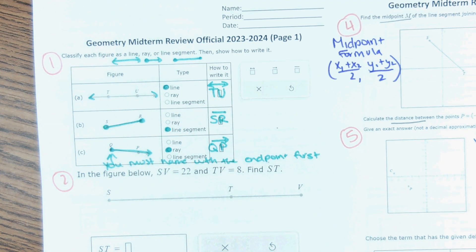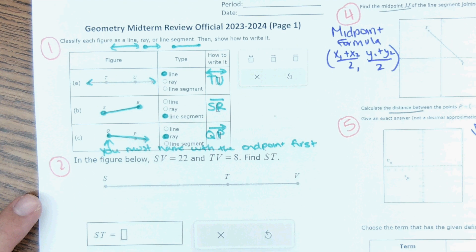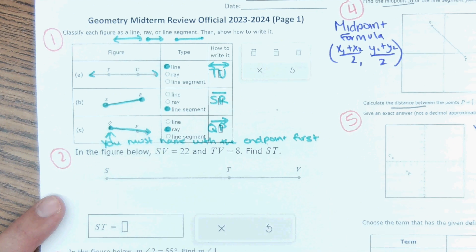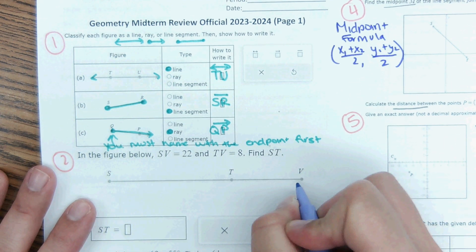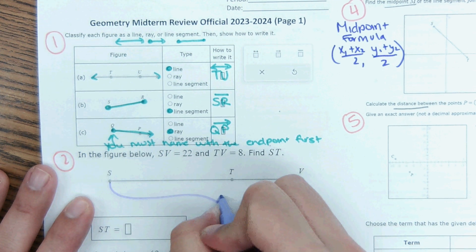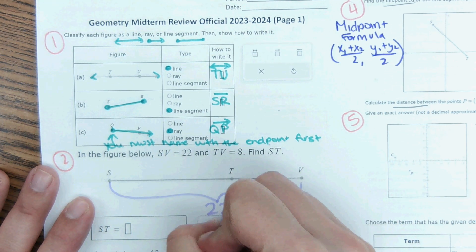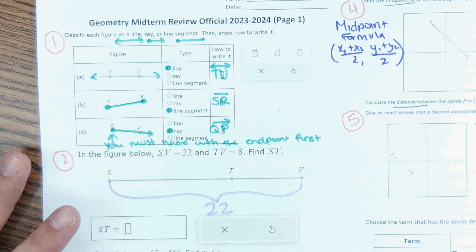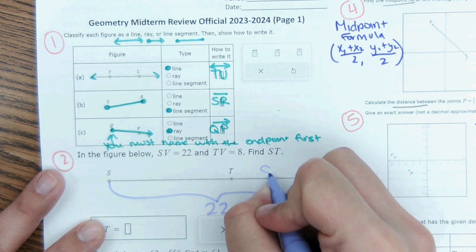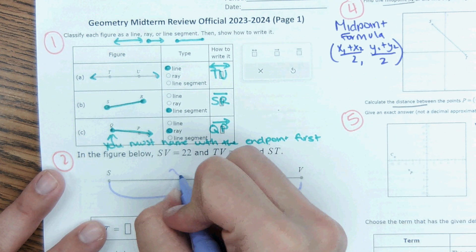Okay, next one, number two. In this figure below, SV is 22 and TV is 8. You saw one like this with the sub on that worksheet, but this one is structured a little bit differently. Obviously, SV is 22 and then TV is 8 and then it asks to find ST right here.